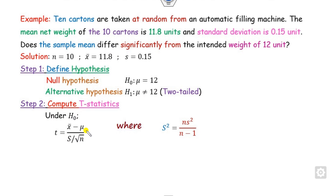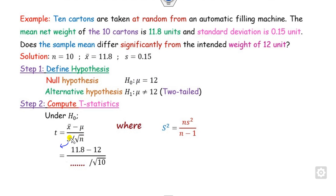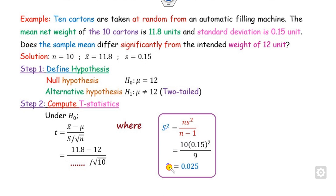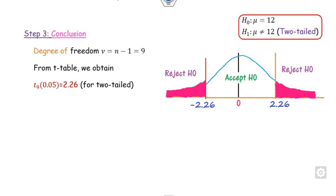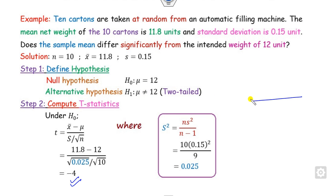Step two: compute the t-statistic. Substituting x-bar and mu = 12, we need capital S. Using n = 10 and small s = 1.5, we compute S-squared as n divided by n minus 1 times s-squared. After calculation, S-squared is found, and substituting into the t-formula gives t = -4.